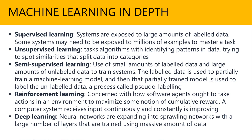Next is unsupervised learning, which tasks algorithms with identifying patterns in data, trying to spot similarities and split data into categories. Then you have semi-supervised learning, which is a mix of both supervised and unsupervised — using small amounts of labeled data and large amounts of unlabeled data to train systems. Reinforcement learning is another type, concerned with how software agents ought to take actions in an environment to maximize some notion of cumulative reward. The computer system receives input continuously and is constantly improving by itself.